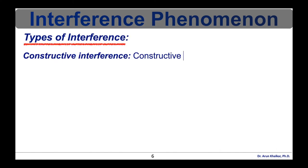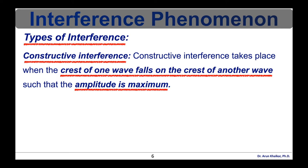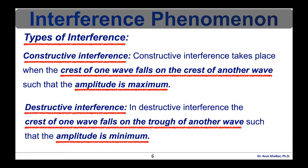The principle of superposition of waves states that when two or more waves of the same type are incident on the same point, the resultant amplitude at that point is equal to the vector sum of the amplitudes of the individual waves. Interference of light waves can be either constructive or destructive. If the crest of a wave meets the crest of another wave of the same frequency at the same point, the resultant amplitude is the sum of the individual amplitudes — this is constructive interference. If the crest of a wave meets the trough of another wave, the resultant amplitude equals the difference in the individual amplitudes — this is destructive interference.